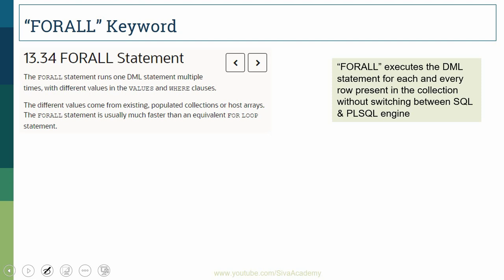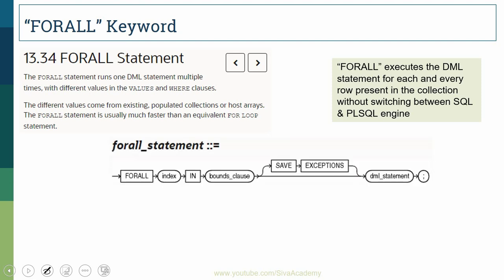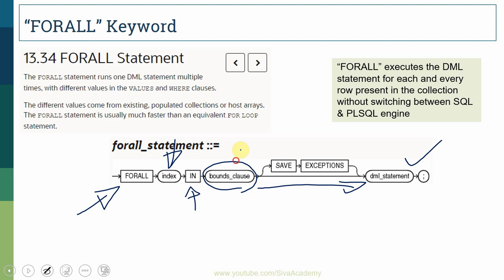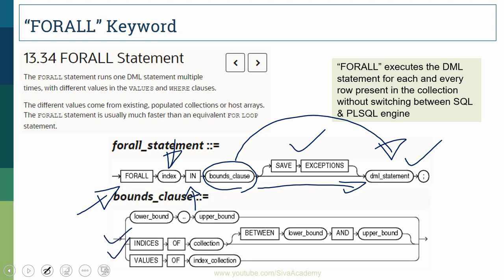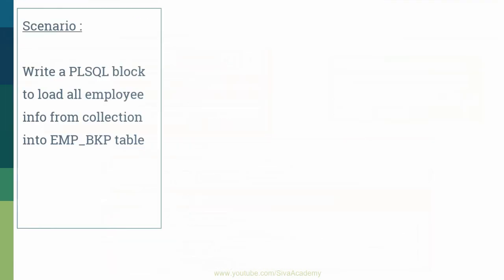Let us look at the syntax of the FORALL keyword. It starts with FORALL, followed by an index variable, then the IN keyword, followed by the bounds clause — which is the collection information — followed by one single DML statement. Optionally, we can use keywords like SAVE EXCEPTIONS, INDICES OF, and VALUES OF, which we will cover in a separate video.